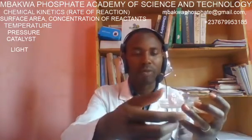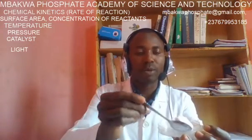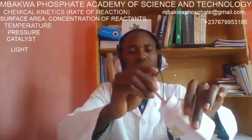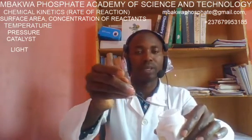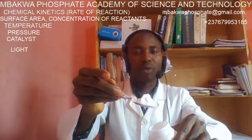The first thing we will be looking at is the surface area of a reactant. I came into this laboratory with a lump of calcium carbonate — you can see a lump of calcium carbonate. And then I want us to see the powder form of calcium carbonate. Now I have powder calcium carbonate here.